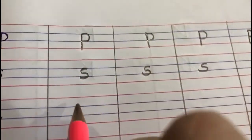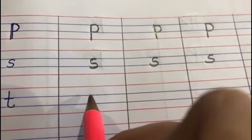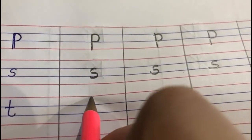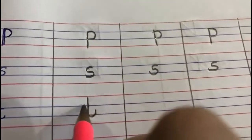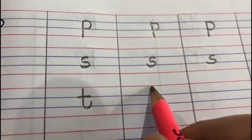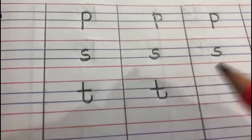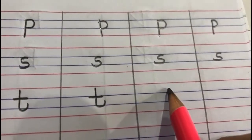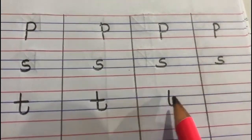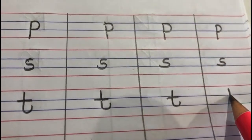And the last letter is letter t. Start from the red line and go down and a lumpity. Sleeping line, t. Red line to blue line down, lumpity and a sleeping line, t. T says t. T says t.